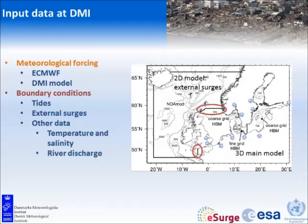This is our model domain — the area where we have our main 3D model. It stops here at the British coast and up between Scotland and Norway, and does not cover Ireland. We also have a 2D model covering the North Atlantic to give us the surge component we need on the boundary — tides and the surge component from that 2D model. We have temperature and salinity from climatology and rivers coming in — about 50 rivers in our model.